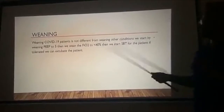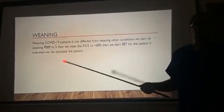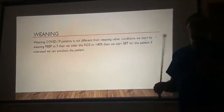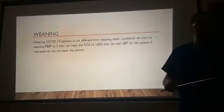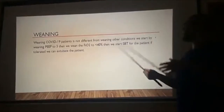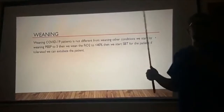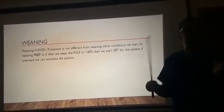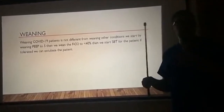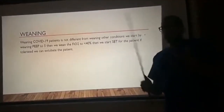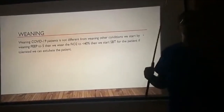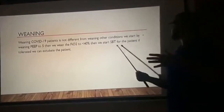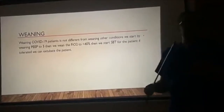In terms of weaning: if the patient is ventilated and getting better, we start weaning. Weaning COVID-19 patients is not different from weaning any other patient. We start by weaning the PEEP until it is 5. If the patient is tolerating PEEP 5, we then wean FiO2 down to less than 40%, keeping SpO2 more than 92 or more than 90. Then we start giving the patient spontaneous breathing trials (SBT). If the patient tolerates SBT, we can extubate. If not, we keep the patient on mechanical ventilation until they get better.